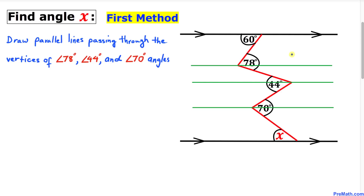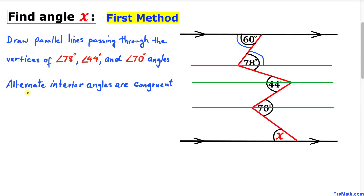For the first method, we construct parallel lines through the vertices of the angles 78 degrees, 44 degrees, and 70 degrees. Focusing on the first pair of alternate interior angles: if this angle is 60 degrees, then this angle is also 60 degrees. Since the whole angle is 78 degrees, this remaining angle is 78 minus 60 equals 18 degrees.